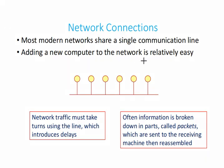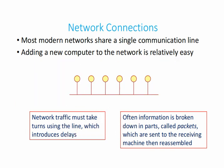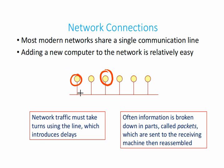Most modern networks share a single communication line, making it relatively easy to add a new computer. This is much cheaper than connecting each computer individually to every other. This type of connection resembles a bus topology. Network traffic must take turns using the line, which introduces delays — for one computer to access data from a server, it has to wait for others to finish first.